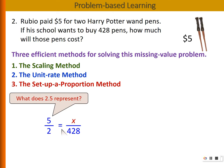And then we have to ask, why should the second ratio x over 428 be equal to the first ratio, which is 2.5?